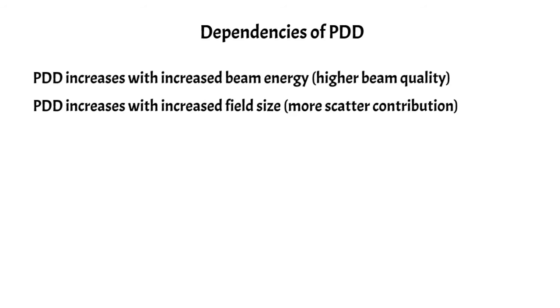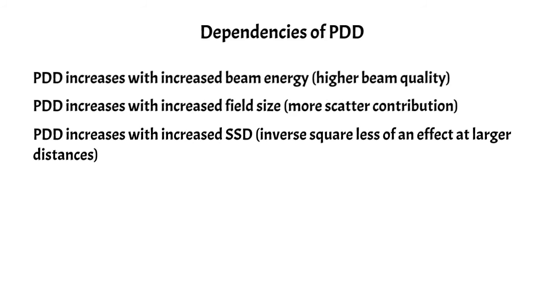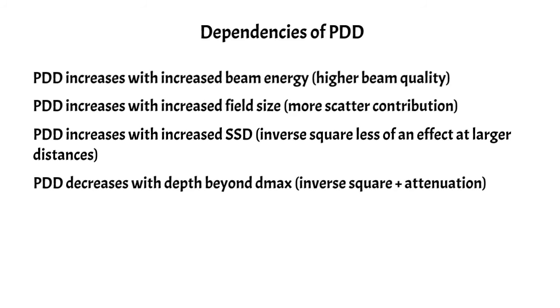It also increases with increased field size because you're actually irradiating more of the phantom and you're getting more of a scatter contribution which increases your dose. You also get a PDD increase with increased SSD because the inverse square is less of an effect when your SSD is larger, and we'll see an example of that later. It also decreases beyond depth of d max, which is very intuitive because of inverse square and also attenuation.